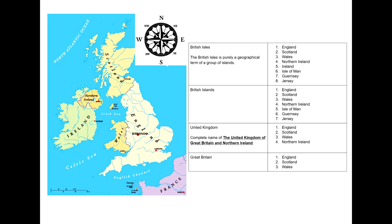The first one is the British Isles, and this is purely a geographical term of a group of islands — eight islands, including England, Scotland, Wales, Northern Ireland, Ireland, the Isle of Man, Guernsey and Jersey.